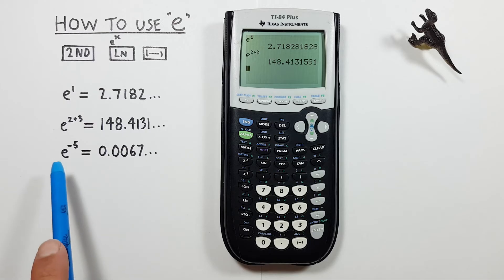We can also use negative exponents, let's say we wanted e to the power of negative 5.